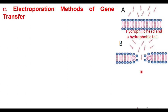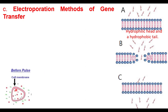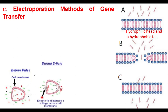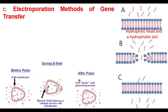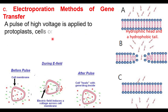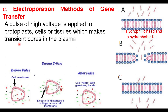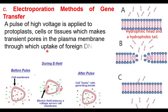When the electrical field is stopped, the opening closes again. The electrical field causes a temporary opening; the charges inside and outside the cell change, making the inside highly positive, so the negatively charged DNA gets into the cell. Then the electrical field is stopped and the openings close. A pulse of high voltage is applied to protoplast cells or tissues, which makes transient pores in the plasma membrane through which uptake of foreign DNA occurs.